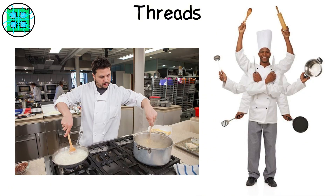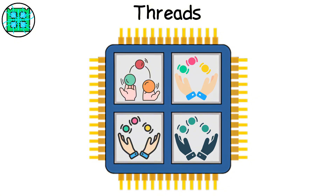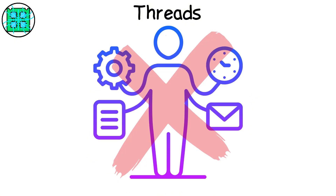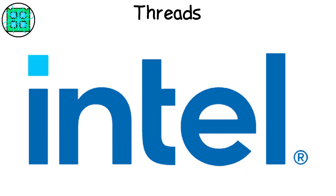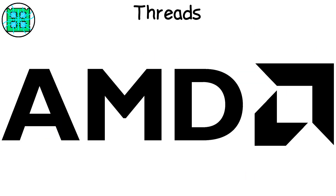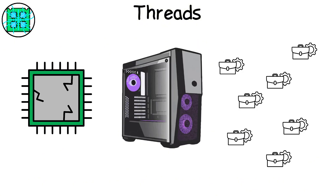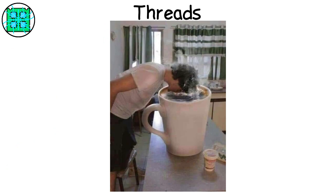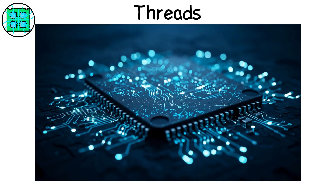Threads are the secret clones of each core. Imagine every chef suddenly learning to work with two hands instead of one — that's threading. Each core can juggle two tasks by splitting its attention between them. It's not true multitasking, more like switching between tasks so fast it feels simultaneous. Intel calls this hyper-threading; AMD calls it simultaneous multi-threading — same idea, fancy names. Threads make computers better at handling lots of smaller jobs, like running background apps while you're gaming.